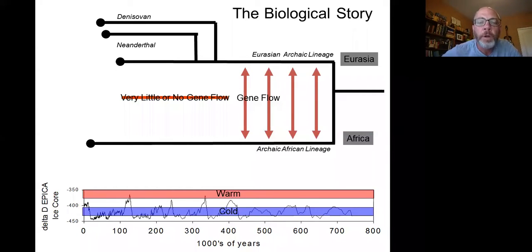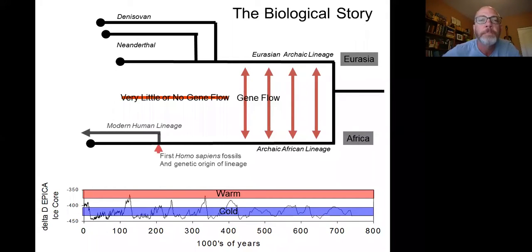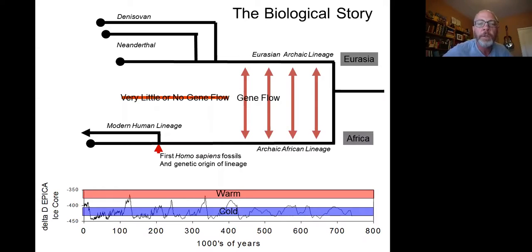You've probably all heard of Neanderthals. The Neanderthal lineage appears around 350,000 years ago, and they become the dominant hominin in western Eurasia — their primary area being what we now call Europe.